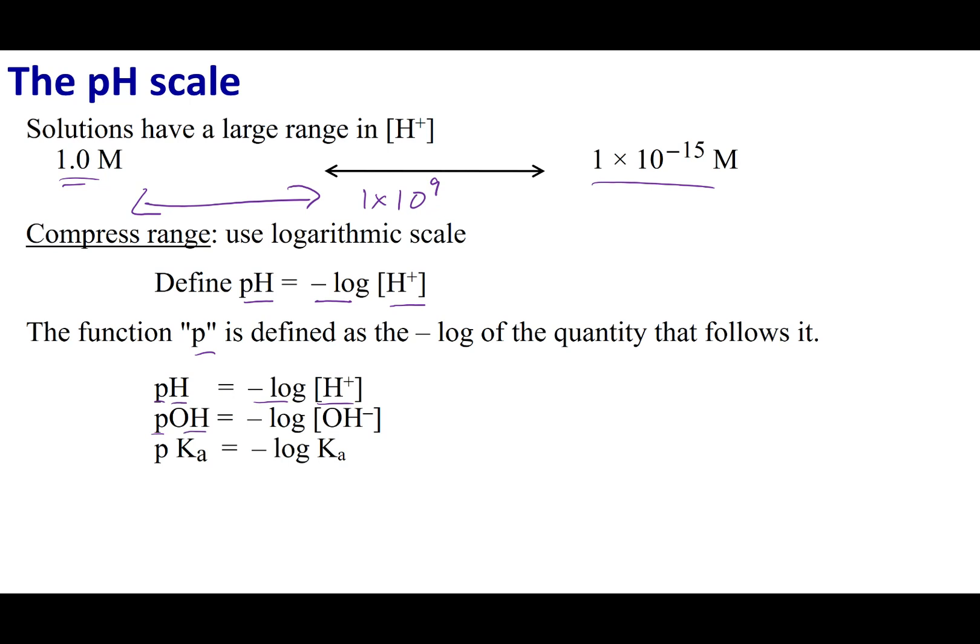If I have pOH, it's going to be the negative log of OH. And if I have pKa, it's the negative log of Ka. So p anything, what us scientists mean is just take the negative log of whatever that anything is.